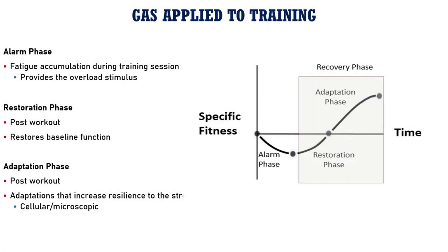The general adaptation syndrome provides the basic physiological foundation for the entire training process, because we know that when humans are exposed to a stress, we adapt to become better at dealing with that particular stress. So if we can apply an aerobic stress, we can become better at dealing with aerobic stresses. If we can provide a neuromuscular challenge by lifting heavy weights, then we can get a responsive neuromuscular adaptation.